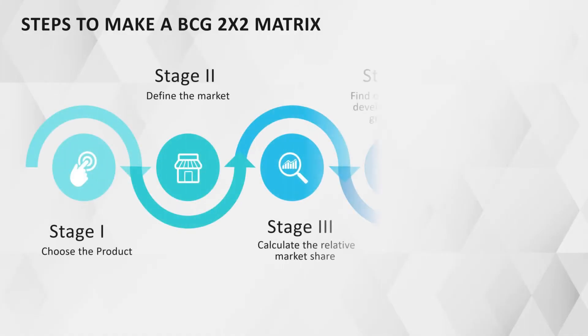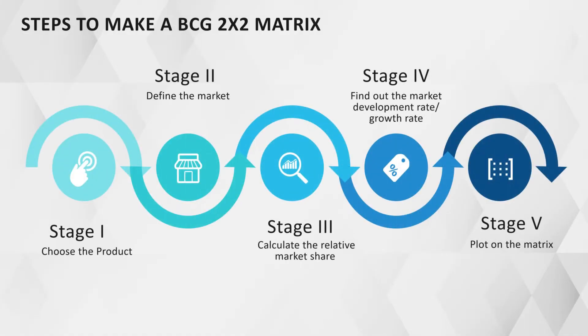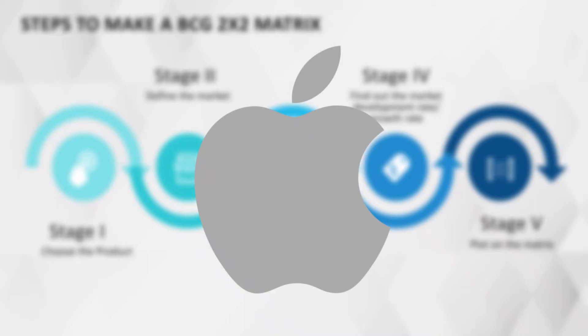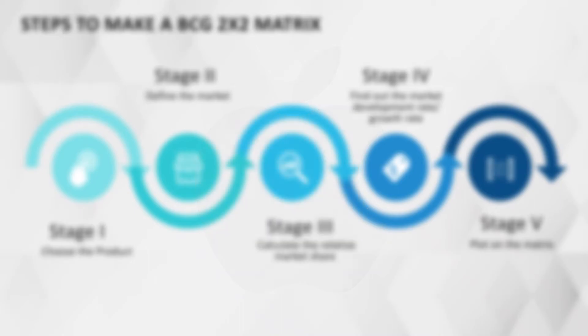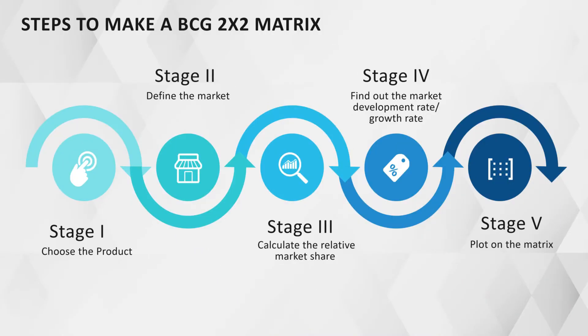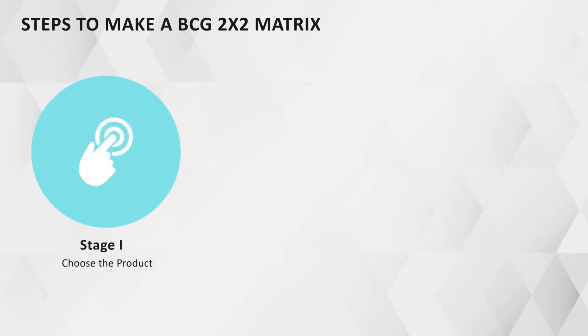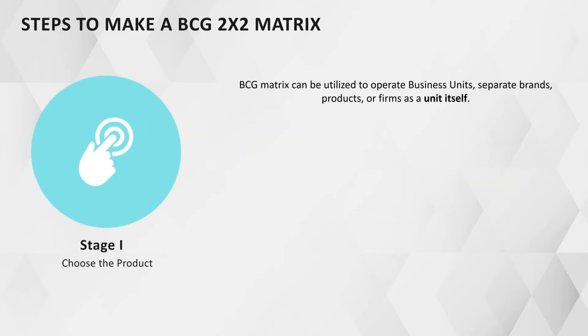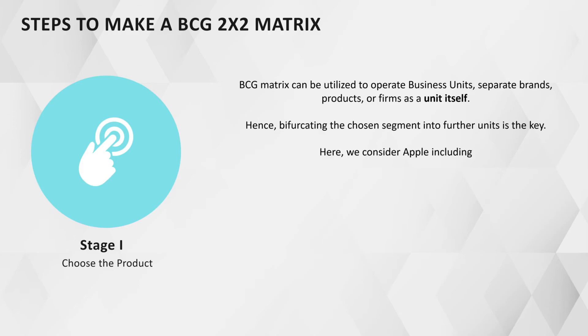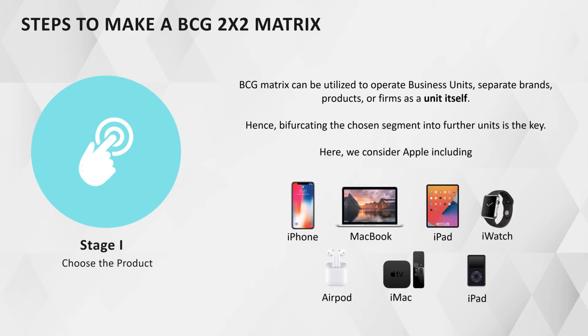Now let's have a look at the steps to make a BCG 2x2 matrix, using Apple as an example. Stage 1: Choose the product. The BCG 2x2 matrix can be utilized for business units, separate brands, products, or divisions as a unit itself. Hence, bifurcating the chosen segment into further units is key.